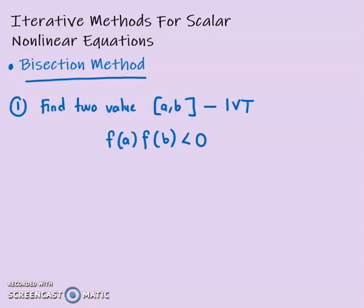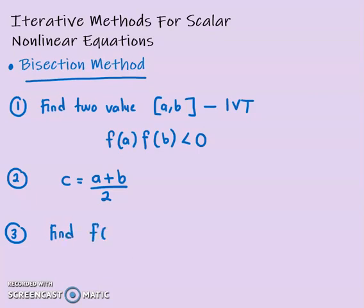If this condition is not satisfied, you need to adjust the interval. Once you have located the root, the second step is to find the value C. C is found by (A + B) / 2. Having obtained C, we then want to find F(A), F(B), and of course F(C).